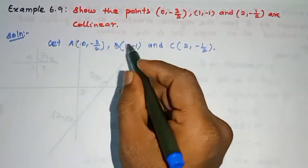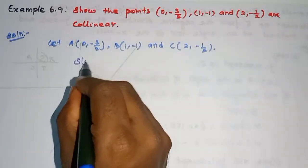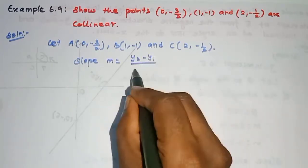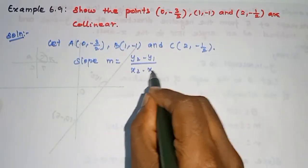So, to find slope, we use two-point form. So, slope m is equal to y2 minus y1 divided by x2 minus x1.